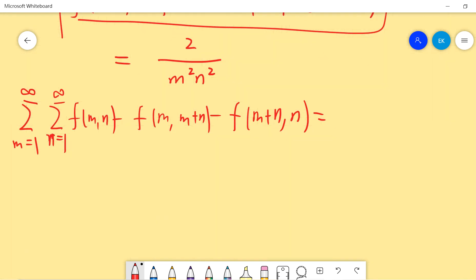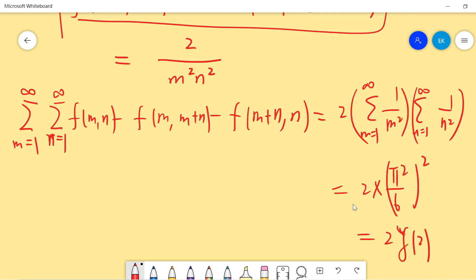So the right-hand side is trivial. The right-hand side is just 2 times the sum from n equals 1 to infinity of 1 over n squared times the sum from m equals 1 to infinity of 1 over m squared, or we can just write it as 2 times zeta 2 squared.